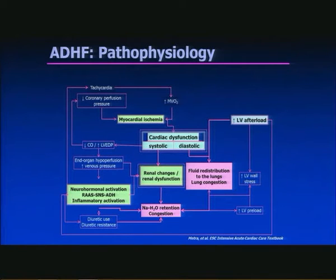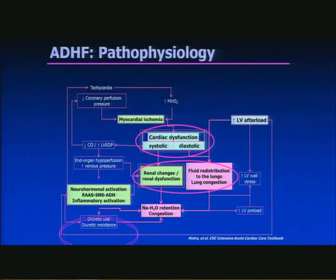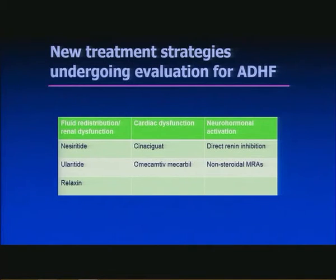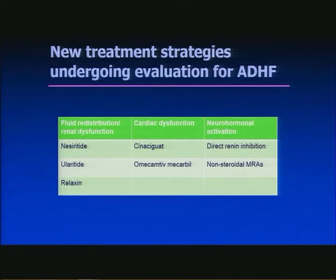Returning to the pathophysiology framework — fluid redistribution, renal changes, cardiac dysfunction, and neurohormonal activation — new treatment strategies can be divided accordingly. For fluid redistribution and renal dysfunction we will look at nesiritide, ularitide, and relaxin. For cardiac dysfunction: cinaciguat and omecamtiv mecarbil. For neurohormonal activation: direct renin inhibition and non-steroidal mineralocorticoid receptor antagonists.